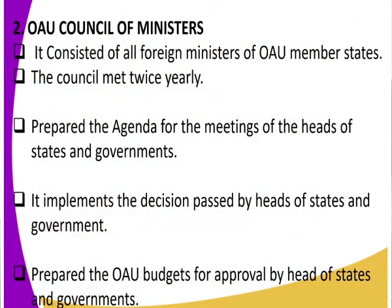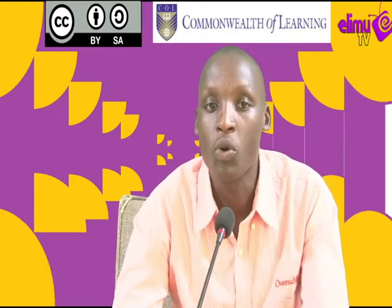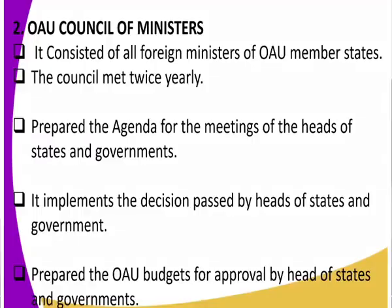The second organ of OAU is the Council of Ministers. It consisted mainly of the foreign ministers. For example, last year Amina Mohammed went to Addis Ababa for the Council of Foreign Ministers because she was our foreign minister. All foreign ministers belonged to the Council of Ministers and they met twice a year. They prepared the agenda of the meeting and also implemented the decisions passed by the heads of state. They also prepared the OAU budgets, which were then approved by the heads of state.